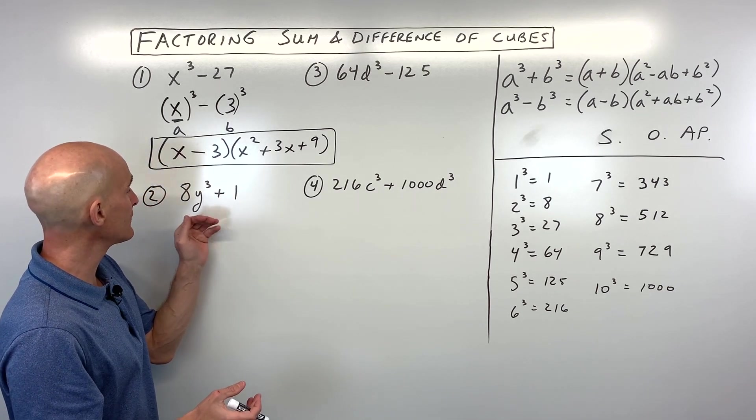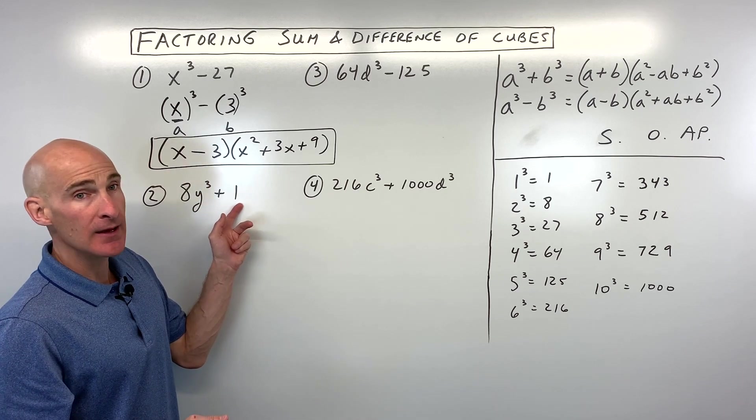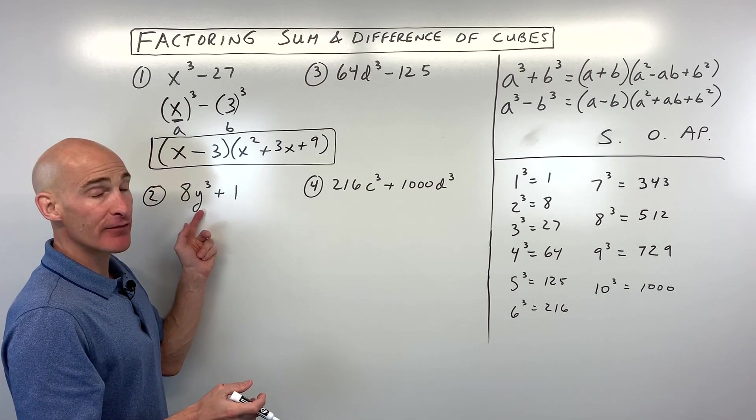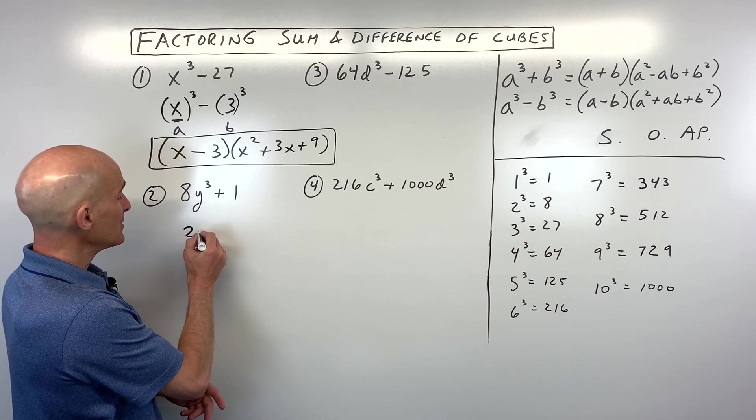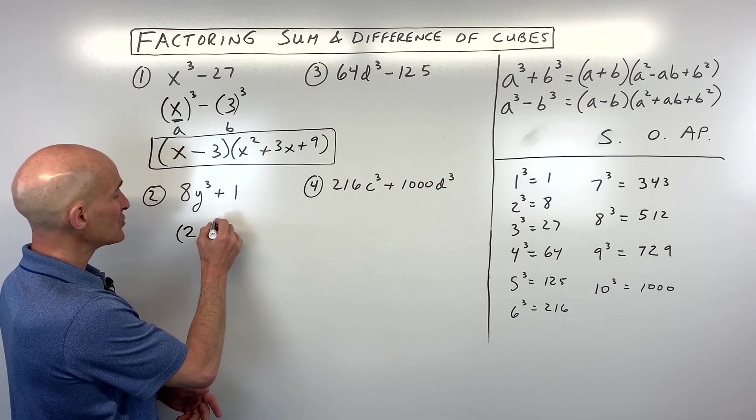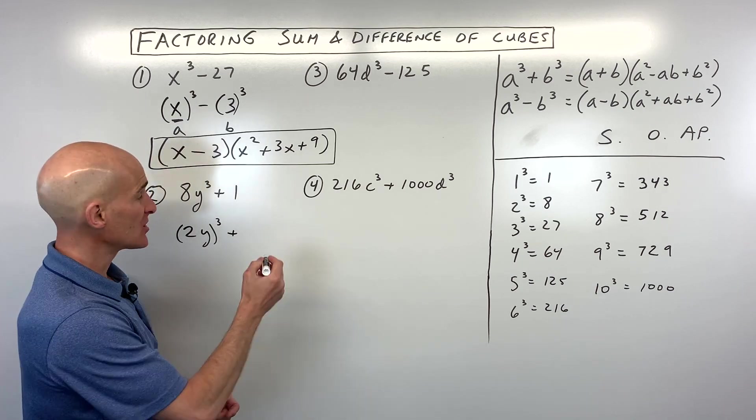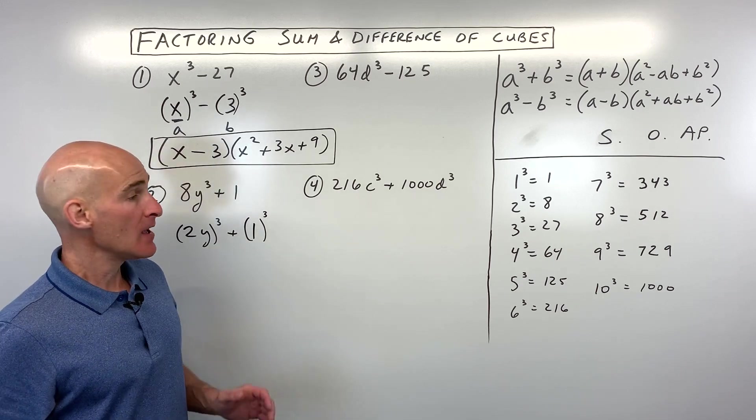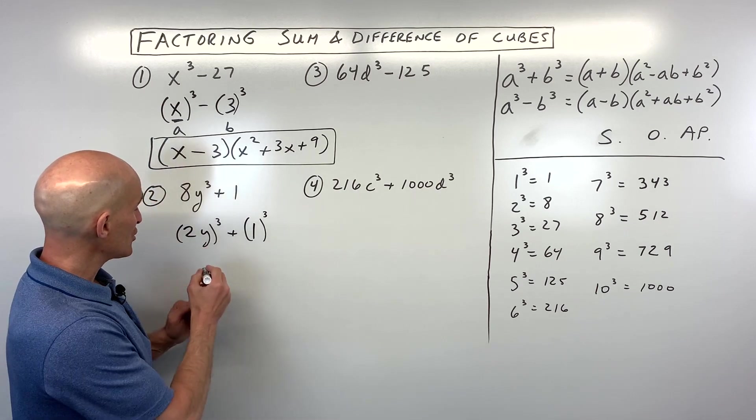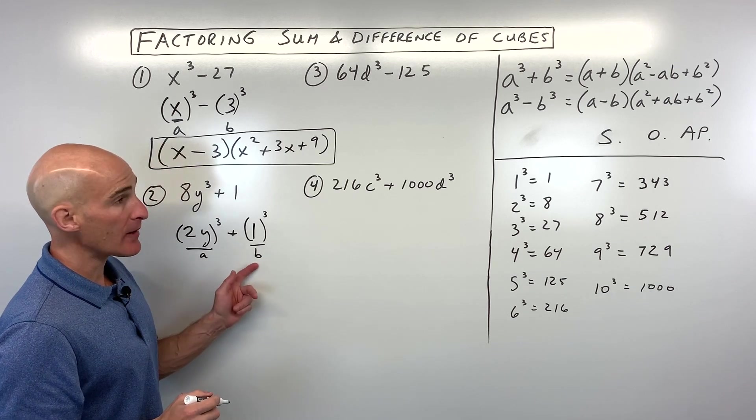So let's look at a more difficult one now. Number two, we've got 8y³ + 1. So what quantity times itself three times is 8y³? Well, that's going to be 2y times 2y times 2y. And what times itself three times is 1? Well, that's just going to be 1. So sometimes people overlook 1 as a perfect cube. The reason I wrote it like this is just to identify the a value and the b value. So a is 2y, b is 1.